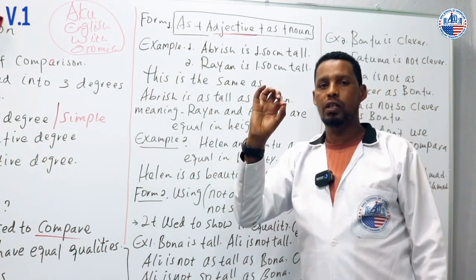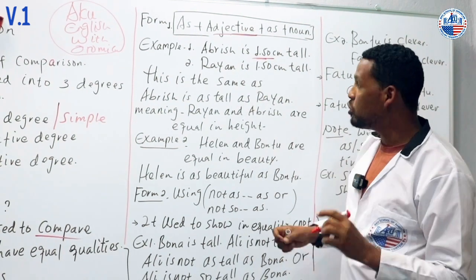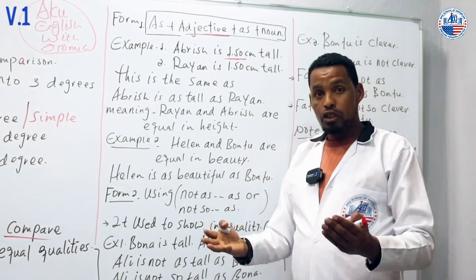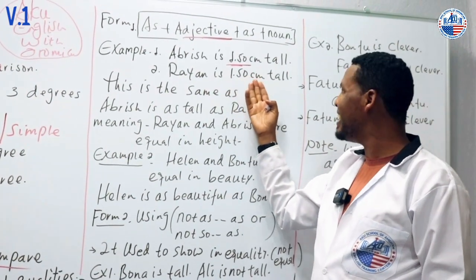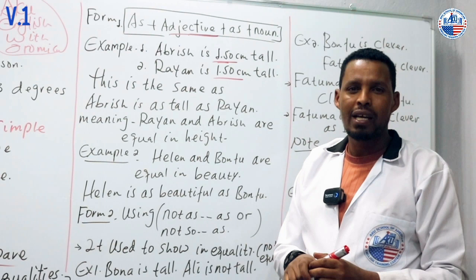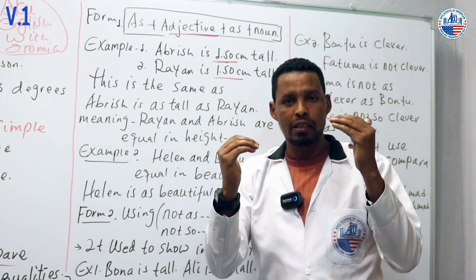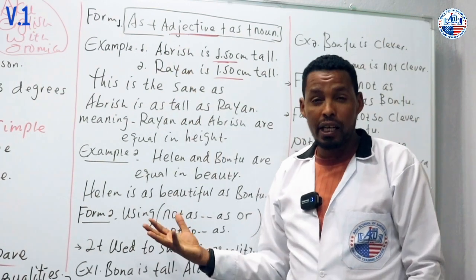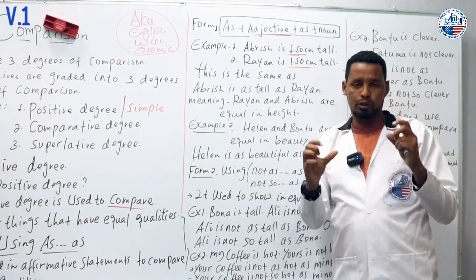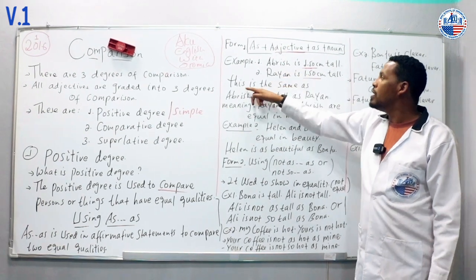Example: Abrish is one point five centimeters tall. Rayyan is one point five centimeters tall. These two children have the same height - they are both one point five centimeters tall. Since they have equal height, we can compare them using positive degree.